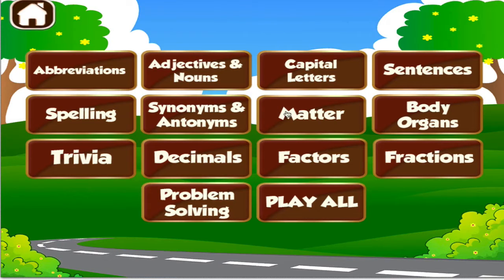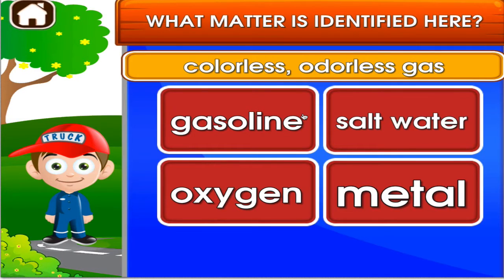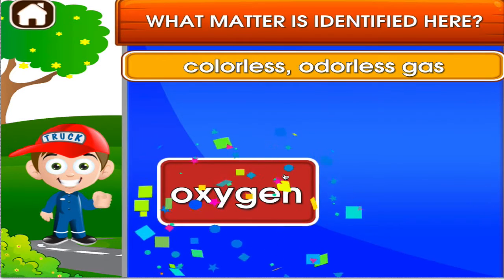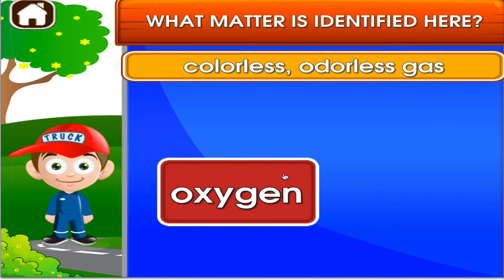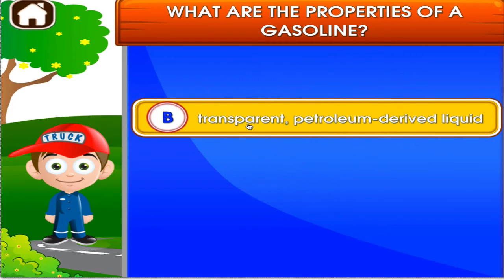Choose the activity you want to play. Matter. Tap the correct answer. Nope. Superb! Tap the correct answer. You're really good at this.